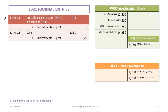On July 31st, 2021, we sell the shares. Prior to the sale, we need to remeasure the portion of shares being sold. The only difference from the FVNI approach is that we debit the unrealized gain or loss on FVOCI investments instead of FVNI investments. We debit the unrealized gain or loss and credit FVOCI investments for Spock for $375. Then for the cash transaction, we debit cash and credit FVOCI investments for Spock for $6,750.